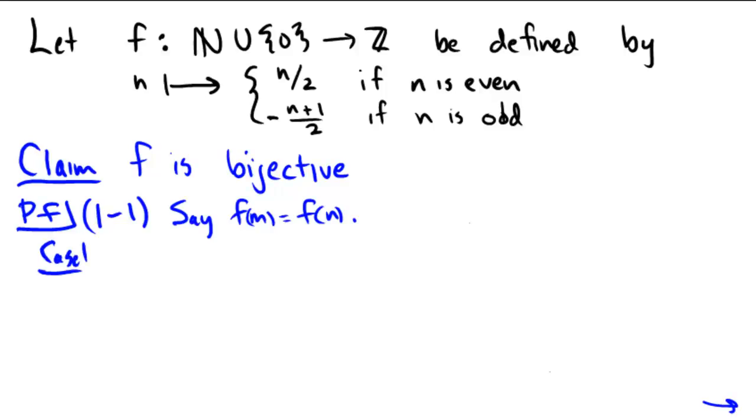Case 1: If f(m) happens to be greater than or equal to 0, if it's non-negative, then so must f(n) be. If one of them is positive and they're equal to each other, then the other one must be positive—non-negative.